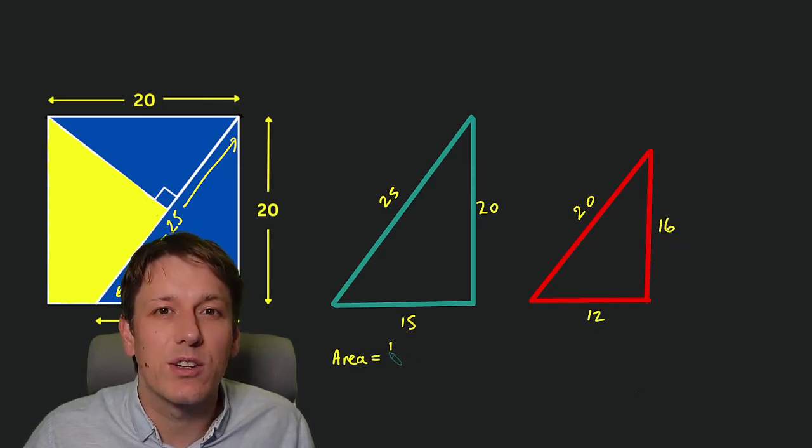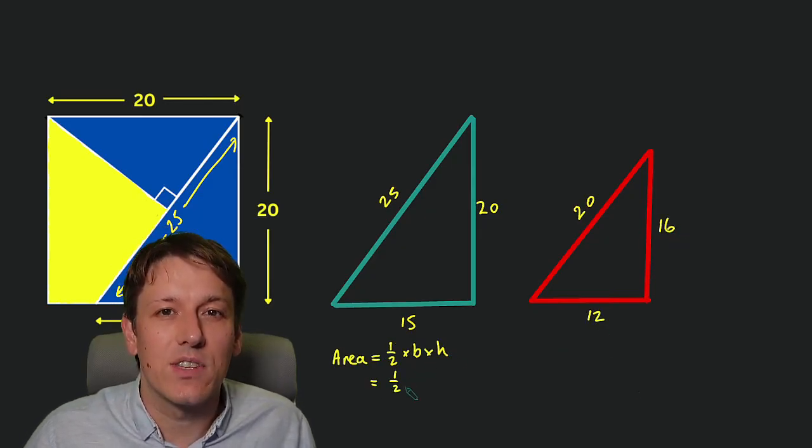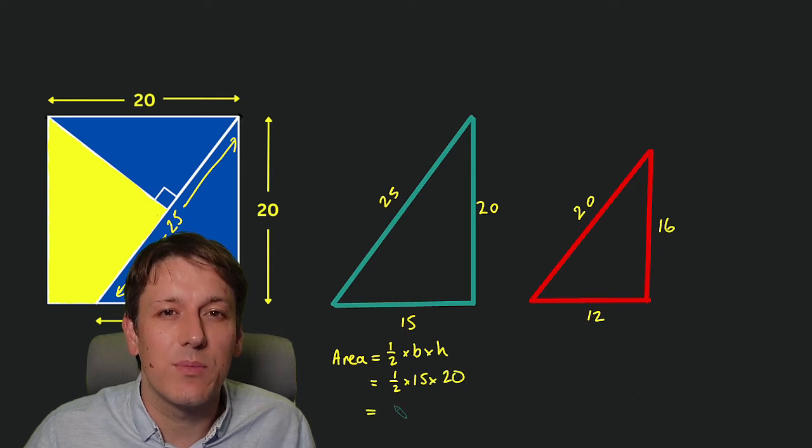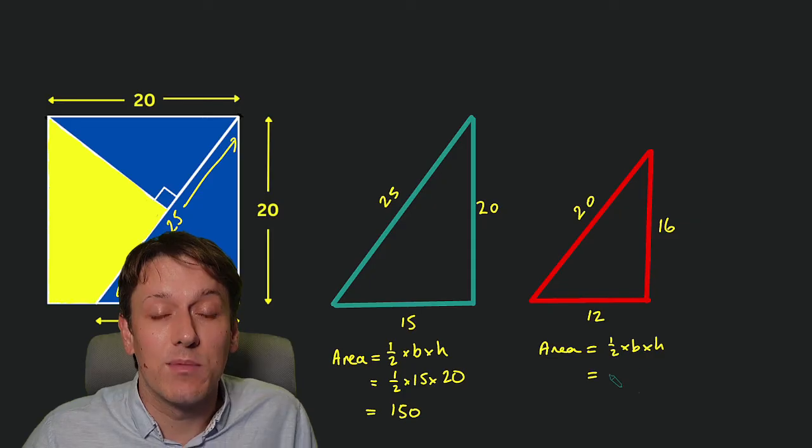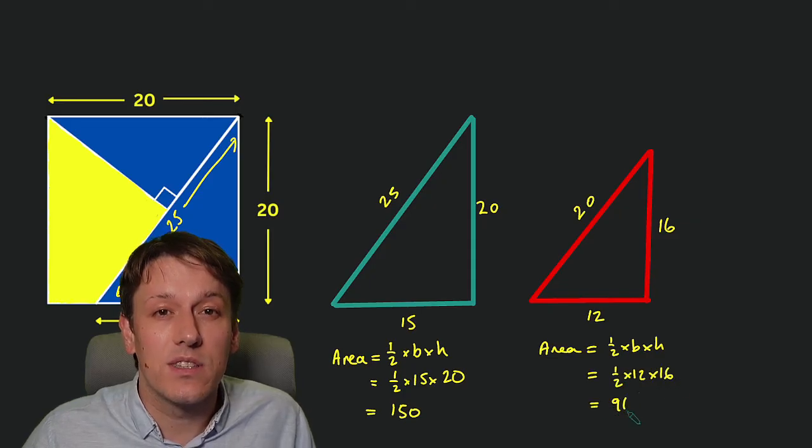So we can work out the area of the green triangle using a half base times height. That gives us a half times 15 times 20 here, which is 150. Similarly in the red triangle, we've got the area being a half times 12 times 16, which is 96.